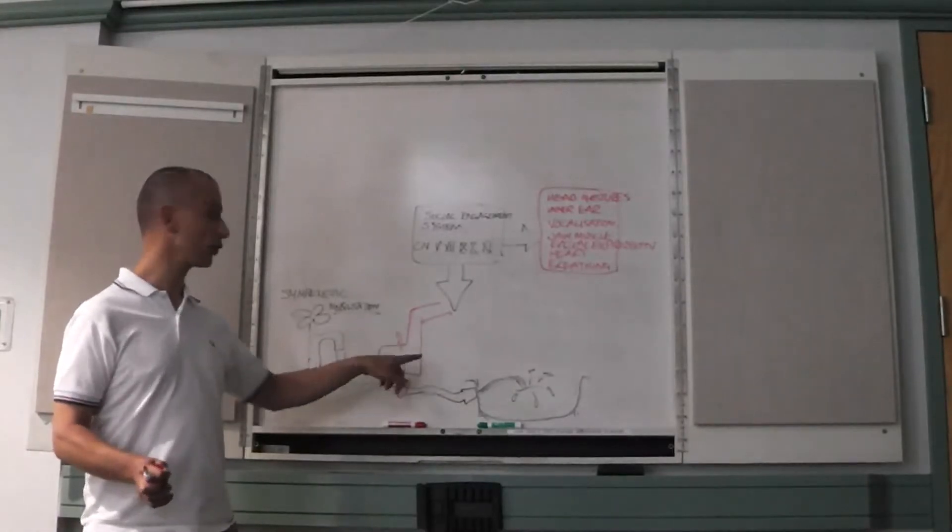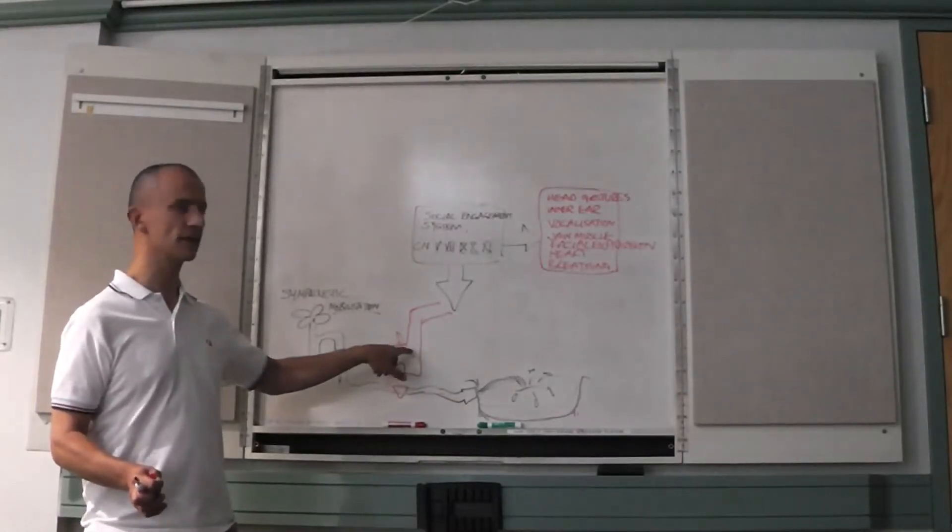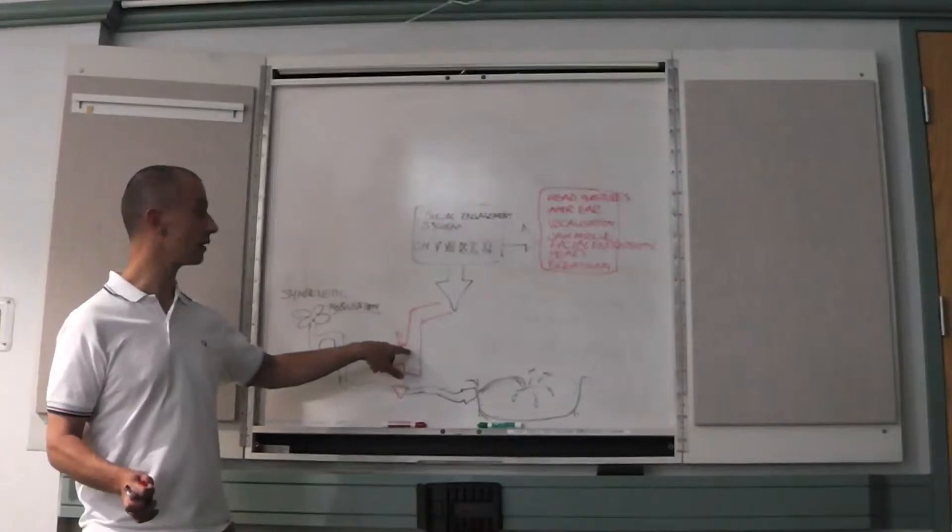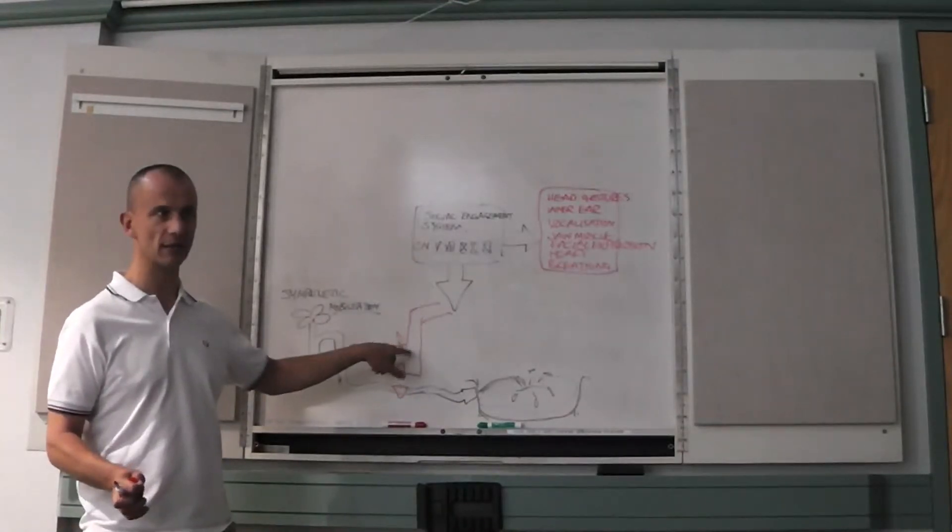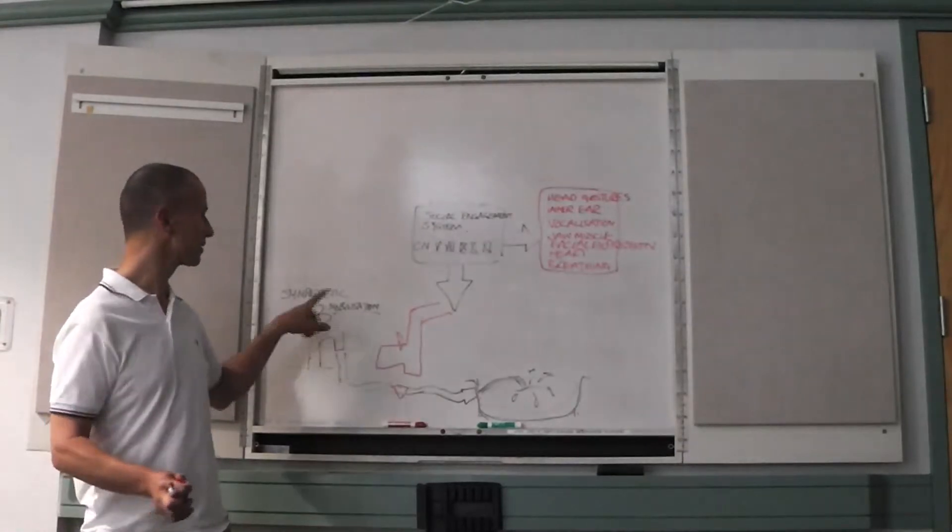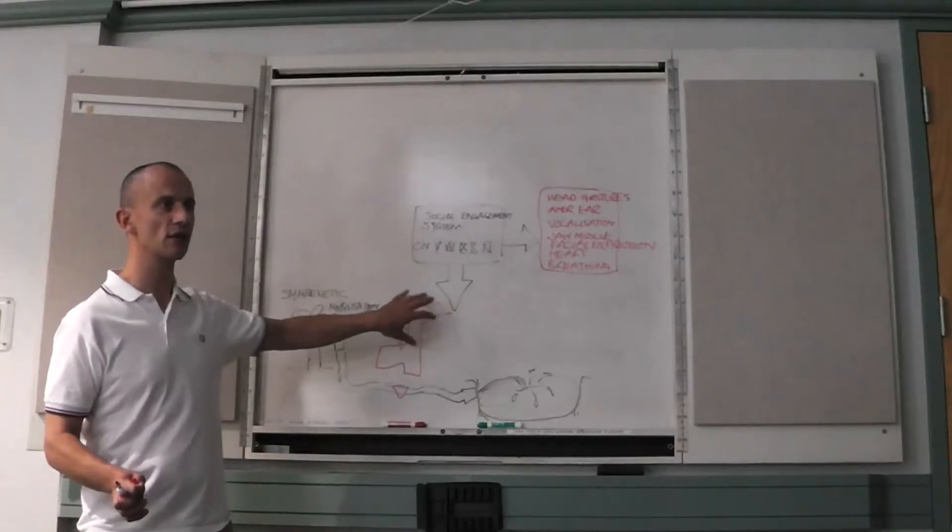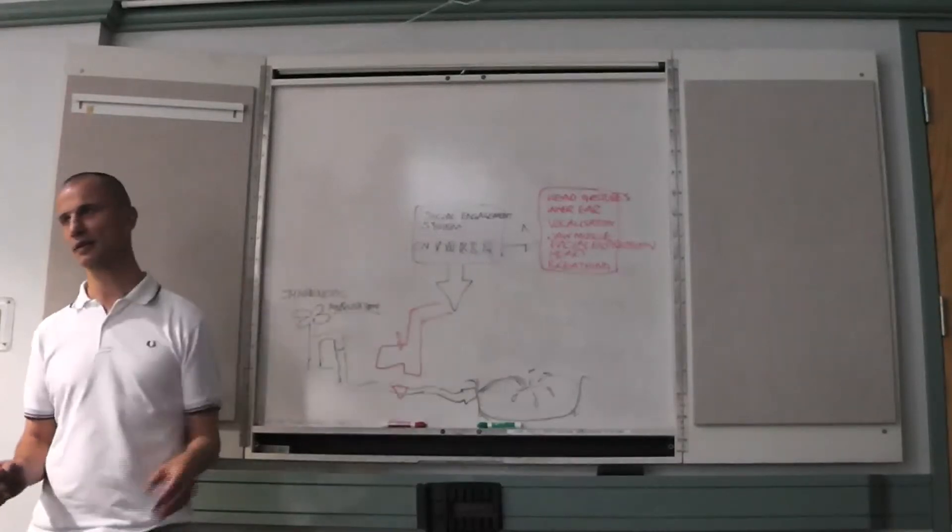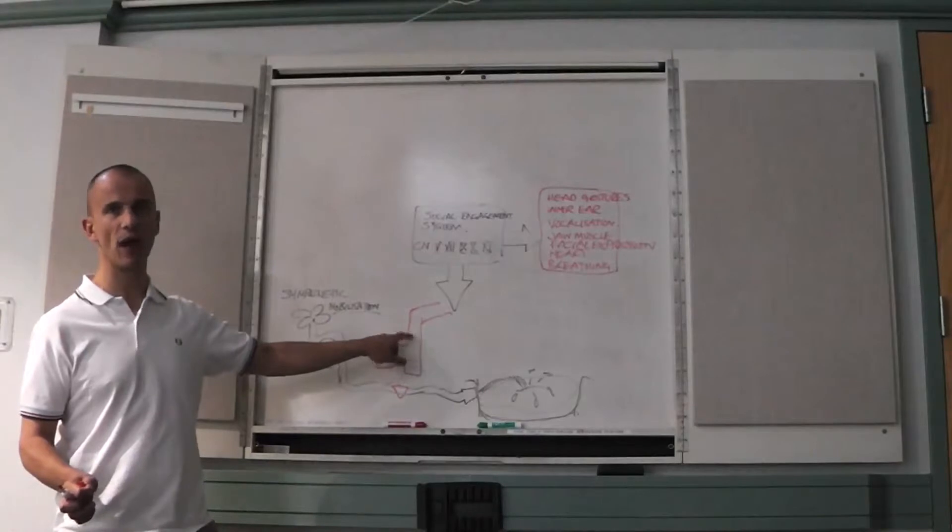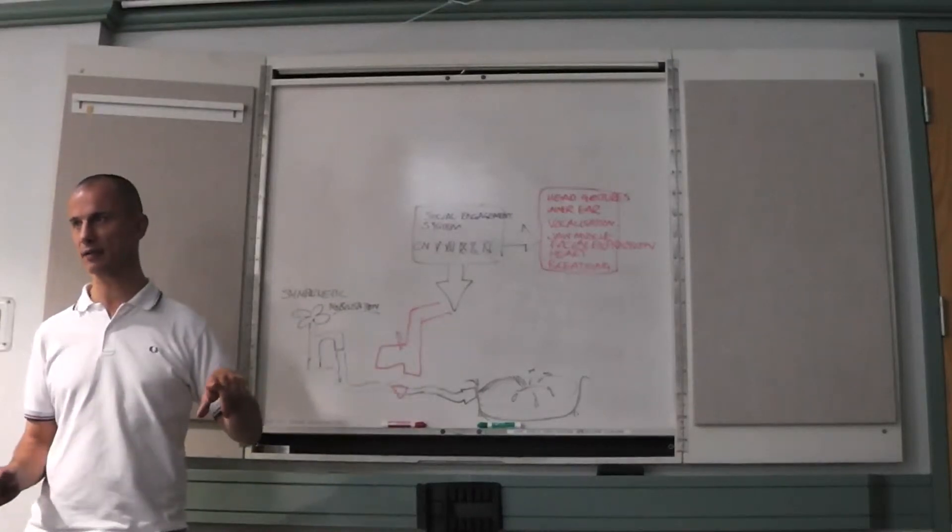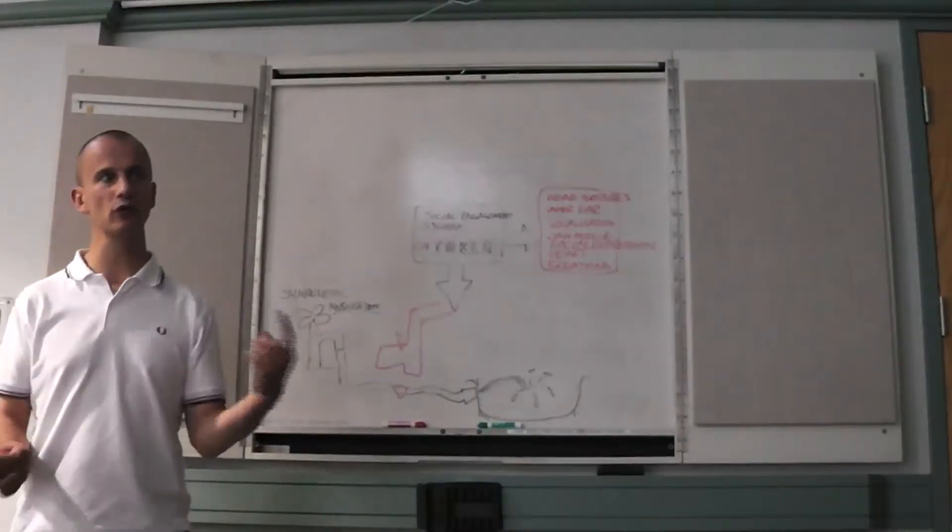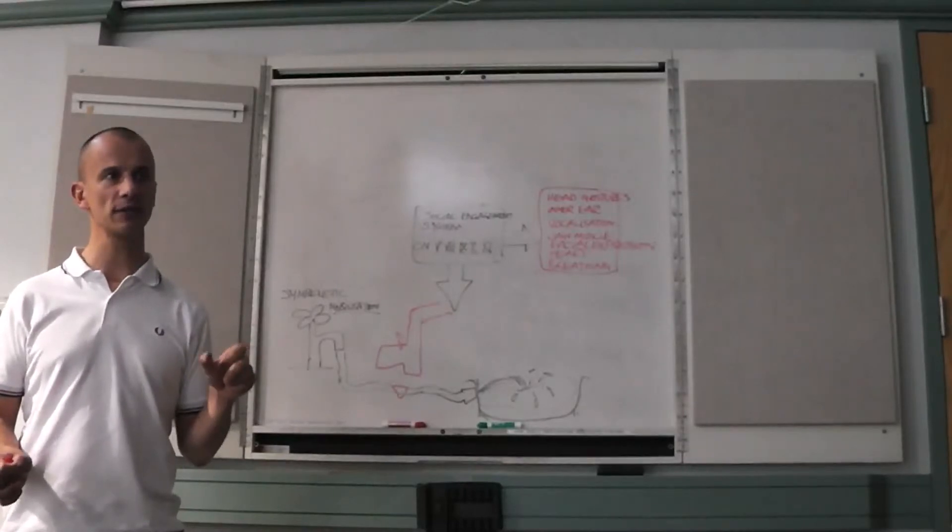So how the body controls things is to make the new stuff work better. Social engagement inhibits the sympathetics. But if for whatever reason these nuclei stop working, our sympathetics take over. And this is the most efficient way of down-regulating the sympathetics is to improve the control from the social engagement system.